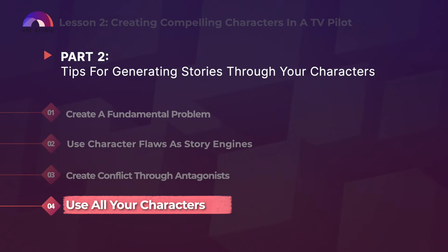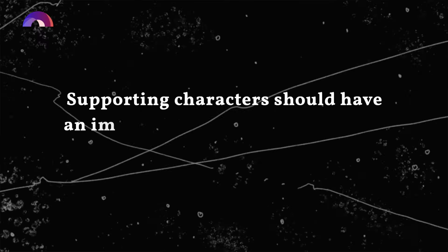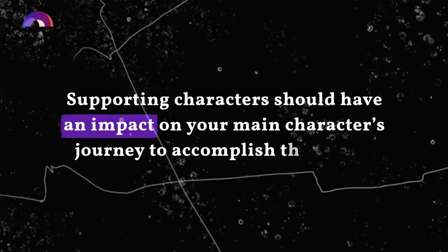But not all characters are protagonists or antagonists. You can also have your protagonist's friends, spouses, kids, bosses, co-workers, whatever. How can these people help generate stories? Well, the answer is in the name — they're supporting characters, not minor characters, supporting characters. Those characters are there to support your story. Don't just think of them as comedic relief or sidekicks. They should have an impact on your main character's journey towards their goal.